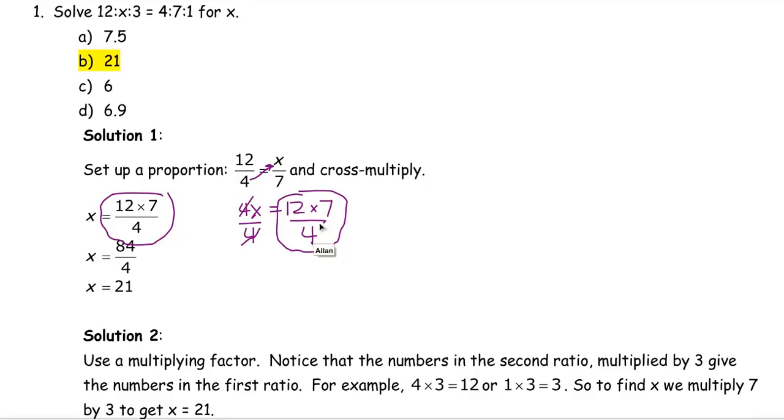Notice that the numbers in the second ratio, if I multiply this 4 by 3, I get 12. If I multiply that 1 by 3, I get 3. So every number here, multiplied by 3, gives the numbers in the first ratio. So I could use that to multiply 7 by 3 to get 21. That's another way to get that x is 21, which again is answer b.